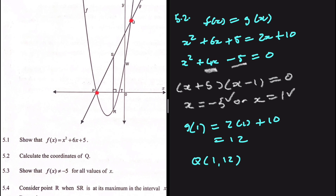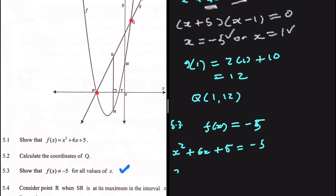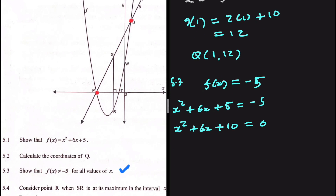For 5.3, we are supposed to show that f of x does not equal minus 5 for all values of x. Let's try assuming it does equal minus 5: x squared plus 6x plus 5 equals minus 5, giving x squared plus 6x plus 10 equals 0.